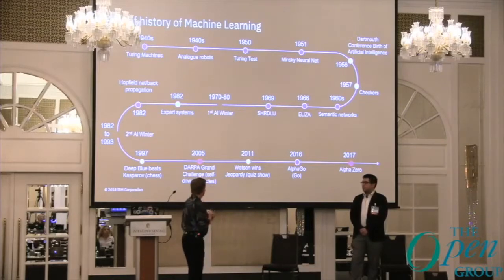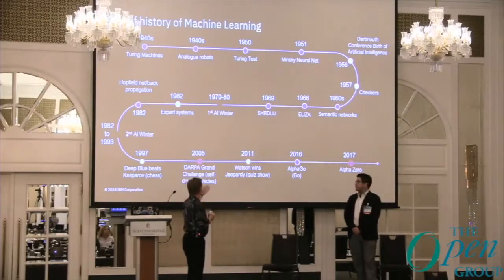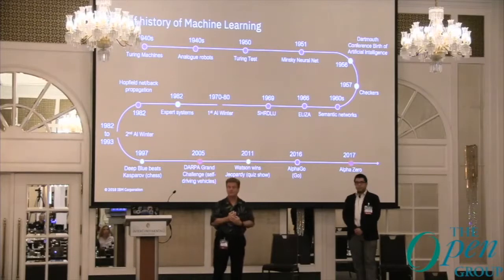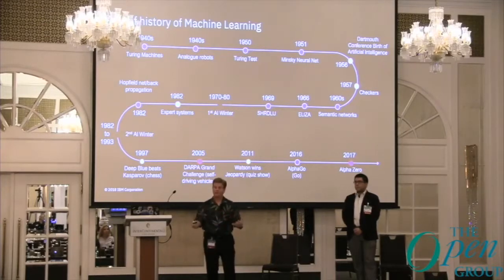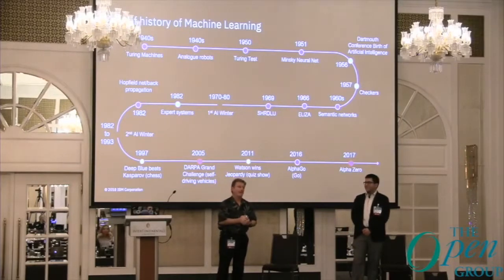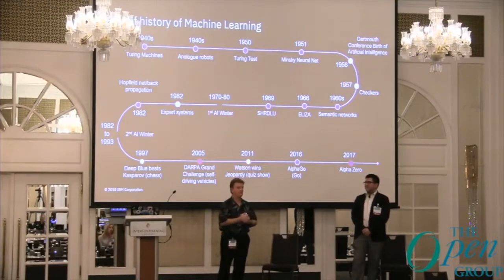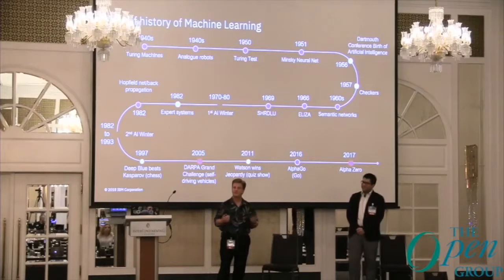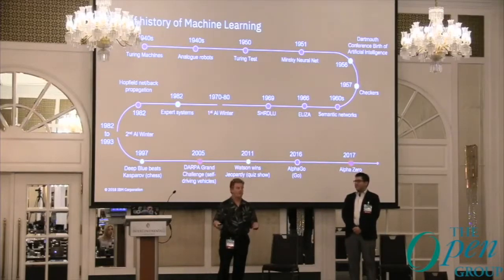Then came the DARPA Grand Challenge. Around the year 2000, IBM scientists were sitting in a bar and Jeopardy! was on TV. They said, 'Why don't we build an artificial intelligence system that can win at Jeopardy?' — because it is a very complex game.